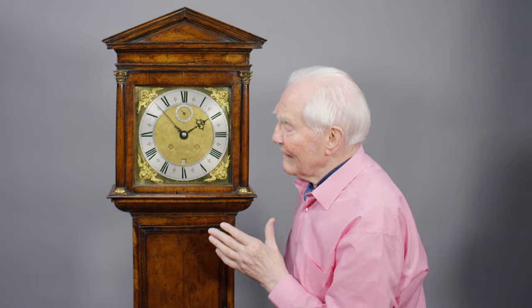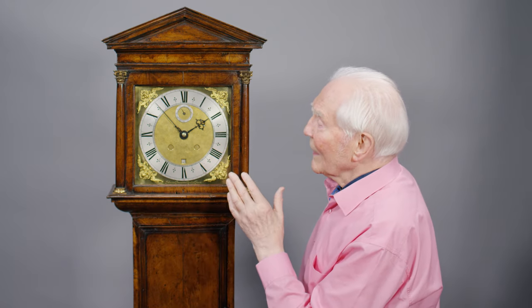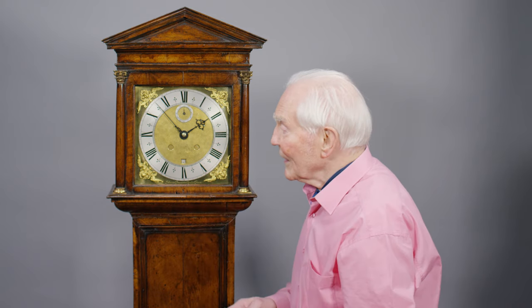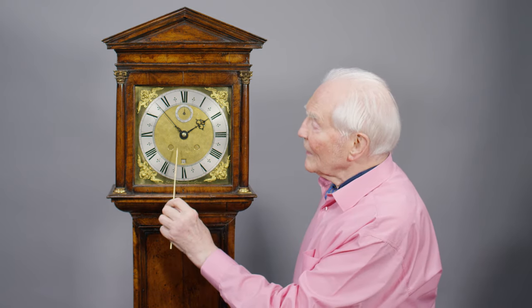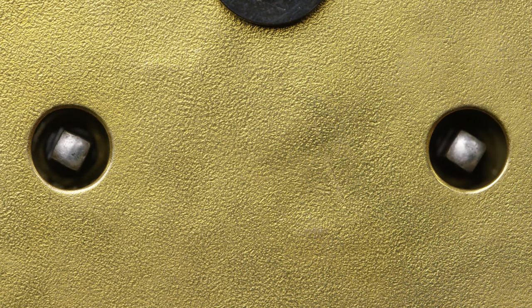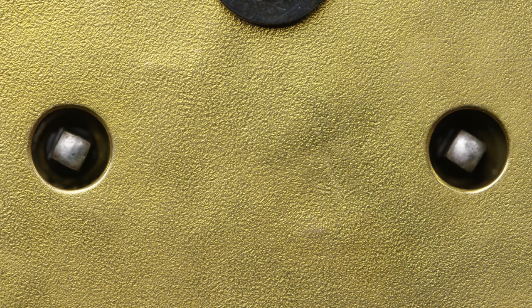And the mechanism is also very different. The thing to look at is the spacing here of the two winding holes - see they're quite close together, far closer together than virtually any other clock, because John's changed the layout of the mechanisms inside.